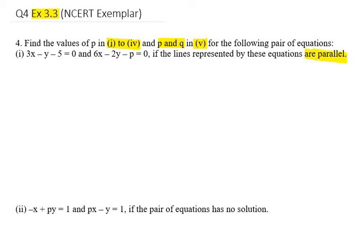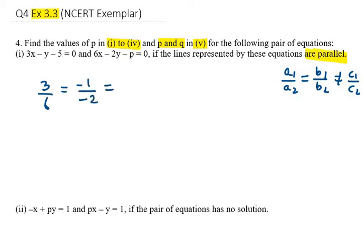When equations are parallel, the condition is that a1 over a2 equals b1 over b2, which is not equal to c1 over c2. So let's find the value of P. Here a1 is 3, a2 is 6, b1 is minus 1, b2 is minus 2, c1 is minus 5, and c2 is minus P.